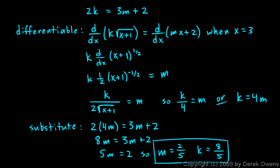m is 2 fifths and k is 8 fifths. Those are the values for m and k which will make that function continuous and differentiable at that point.